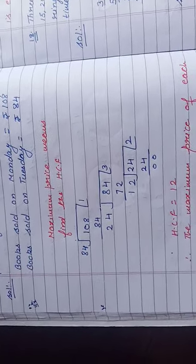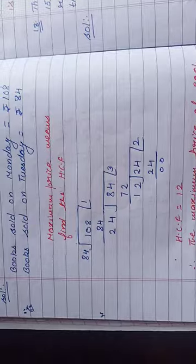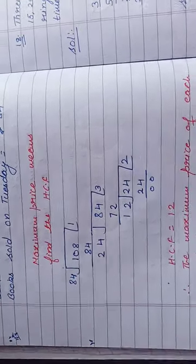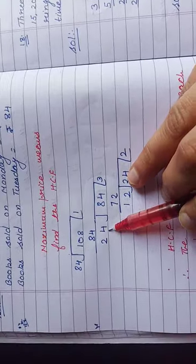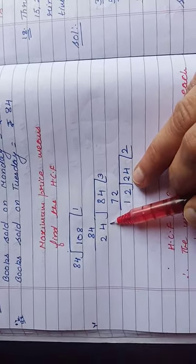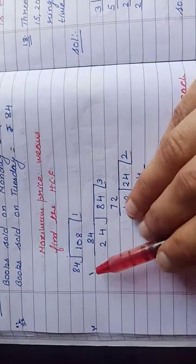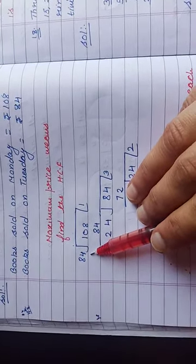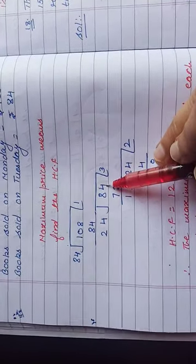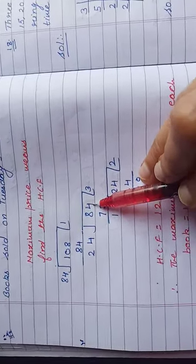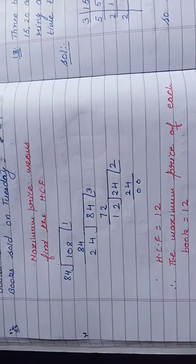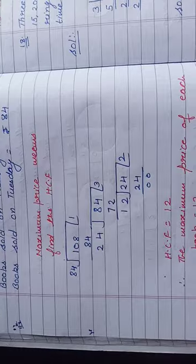84 times 1 is 84. After subtracting, we are getting 24 as remainder. This will behave as divisor for the next step, and the divisor of the first number will behave as dividend for the second number. So 24 times 1 is 24, which is very less compared to 84.